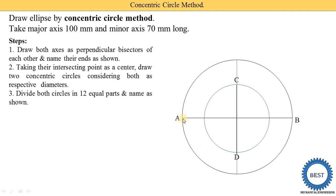Using the compass method: take point A as the center with a radius equal to 50 mm, draw arcs on both sides to get intersection points. Then change the center to point B and draw two more arcs. From all four outer circle points — A, B, and the arc intersections — draw arcs to divide the circle into 12 equal parts.